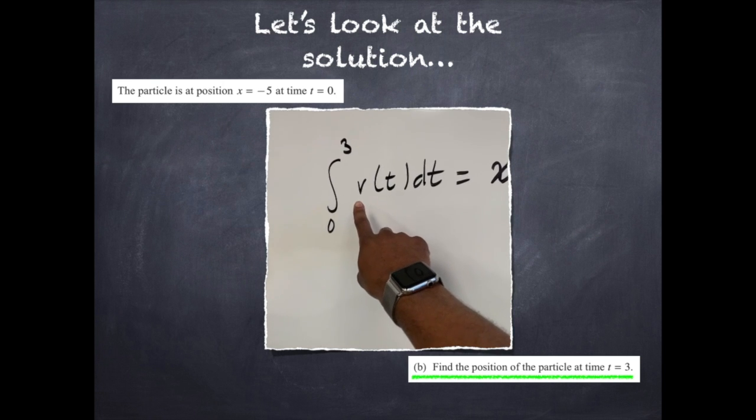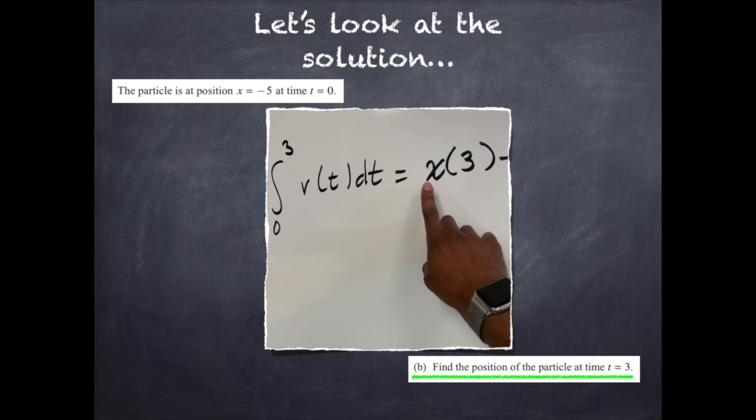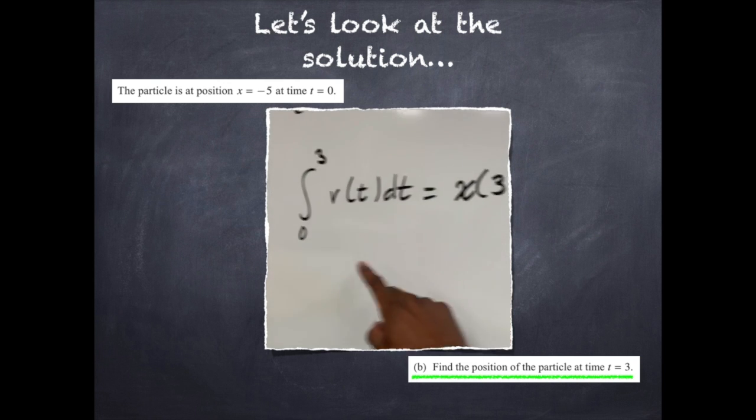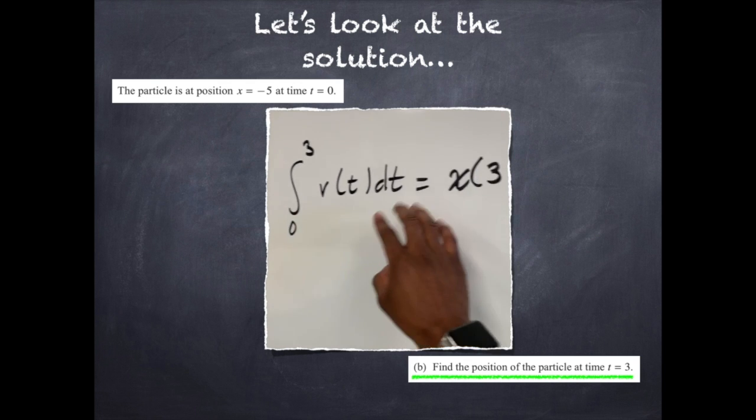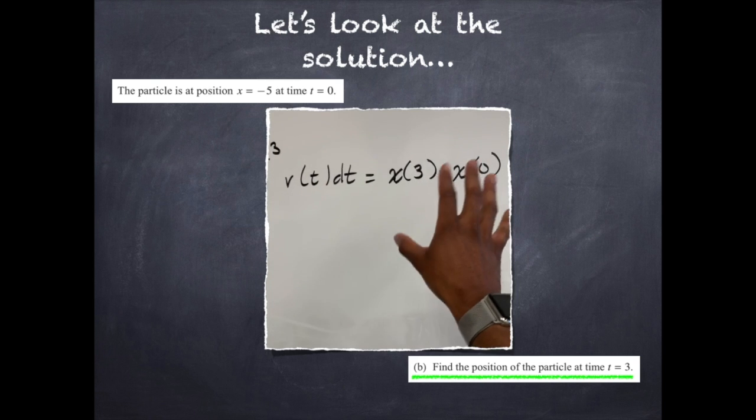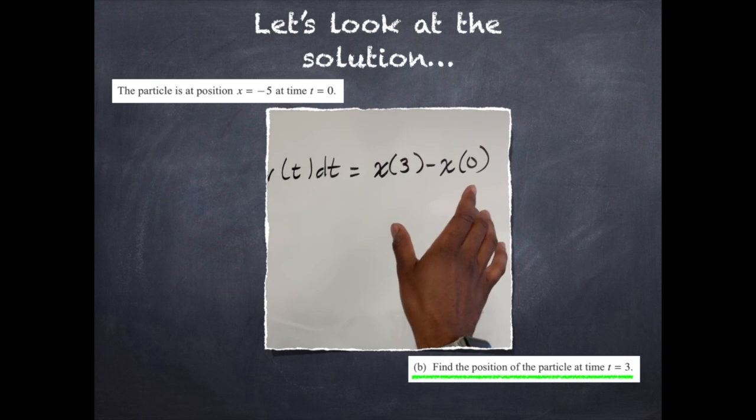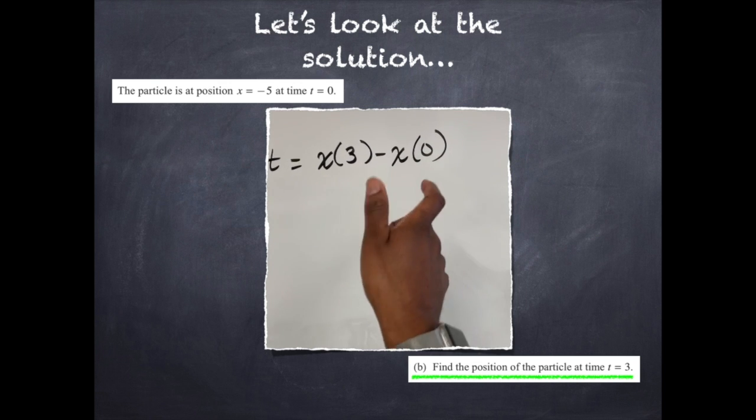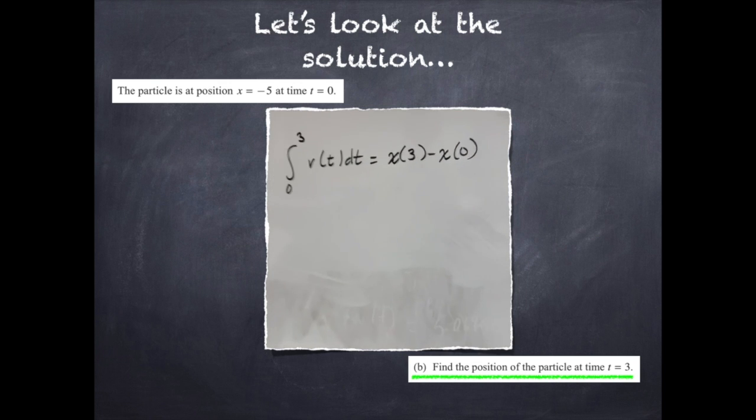See, velocity we integrate we get a position, but it's going to be the position at 3 minus the position at 0. There's my 3 and there's my 0. So the position at 3 minus the position at 0. So technically it's going to give me the displacement between where I started and where I stopped. So that's the first step.